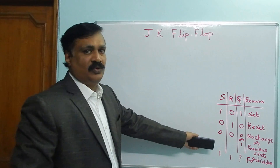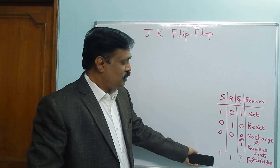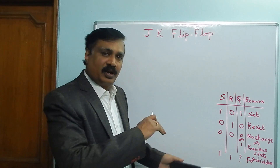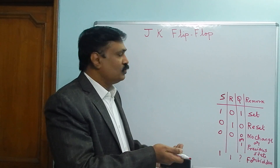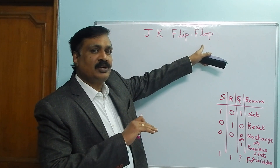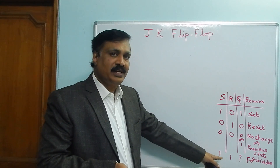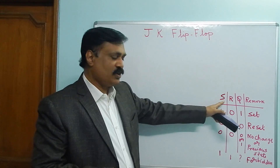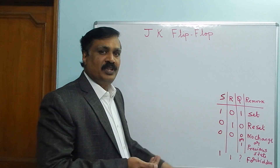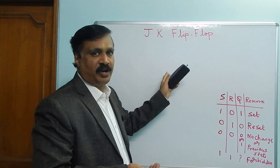When both inputs are 1, 1, it is not allowed because both the inputs being 1 means both outputs would be the same, but according to flip-flop condition both outputs are complements of each other. Therefore we cannot give 1,1 in case of SR flip-flop. Now how will we overcome this drawback in JK flip-flop?